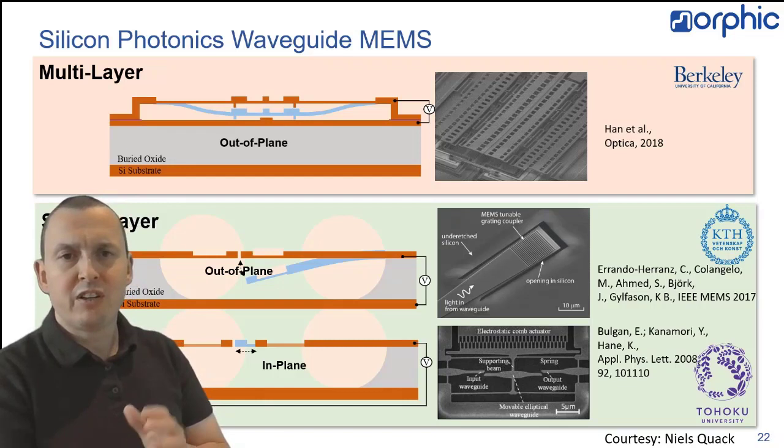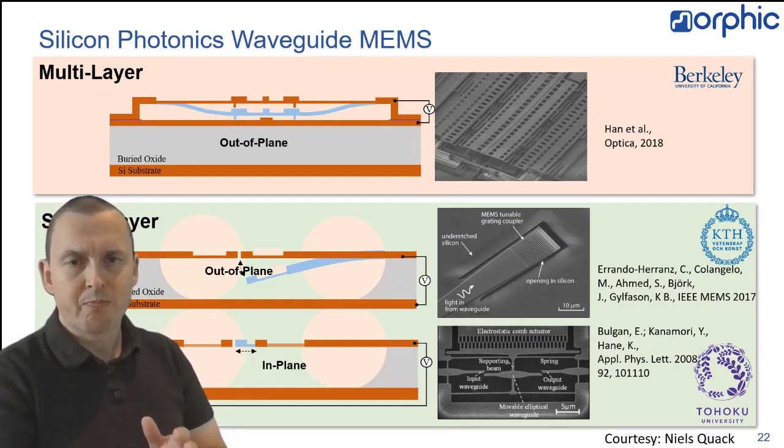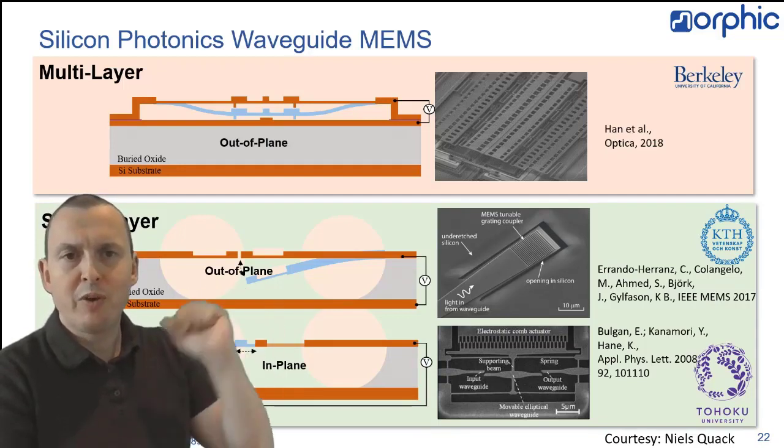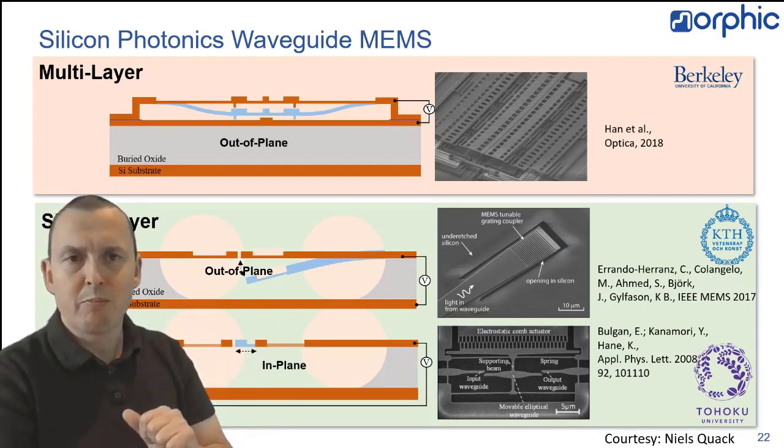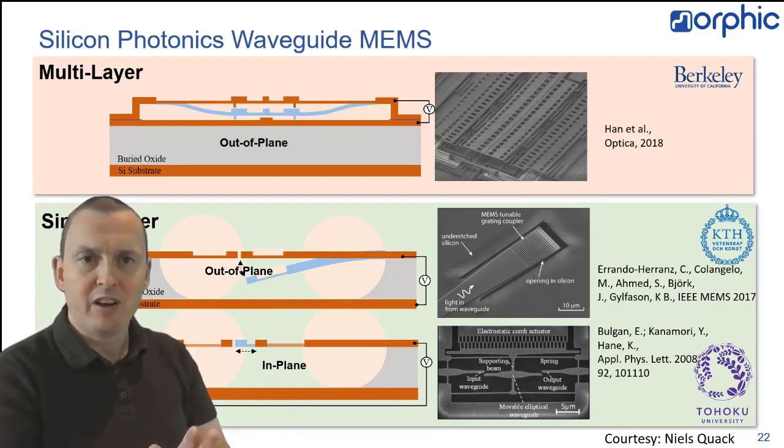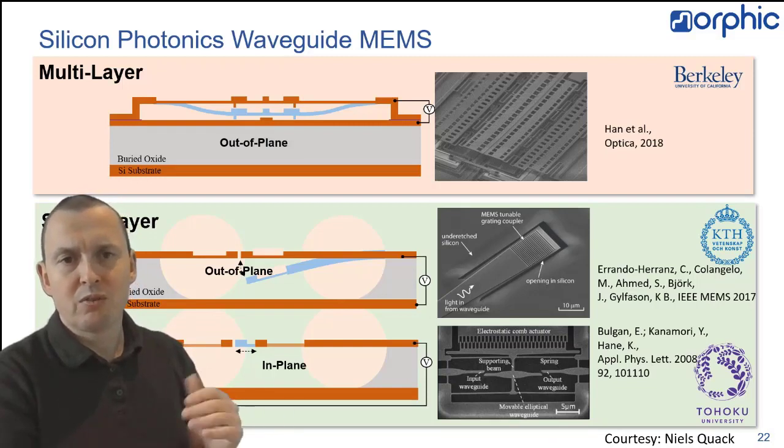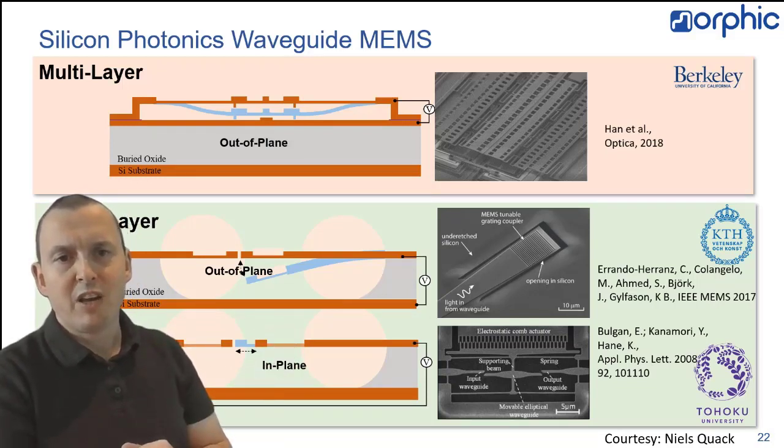If we consider the actuation mechanisms of silicon photonics MEMS, we can identify multi-layer and single-layer MEMS. Now, the multi-layer are quite powerful because you can essentially vertically couple and you can vertically move your waveguides. So, the examples by Berkeley are really quite spectacular and really large scale. However, most photonic circuit systems and technologies have only a single waveguide layer at the moment. So, that means that you have to resort to this kind of out-of-plane or in-plane manipulation of the material to tune your effective index or your coupling.